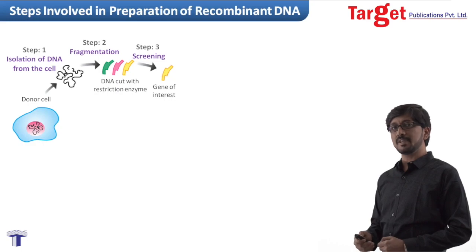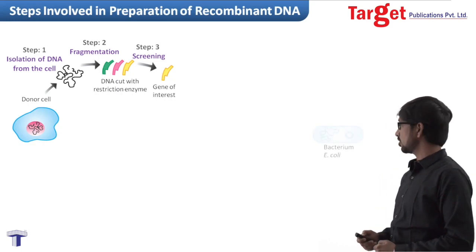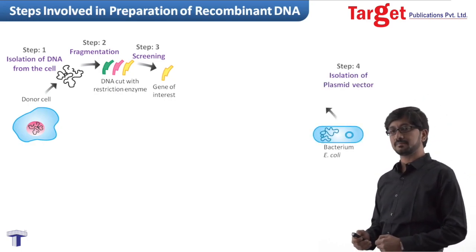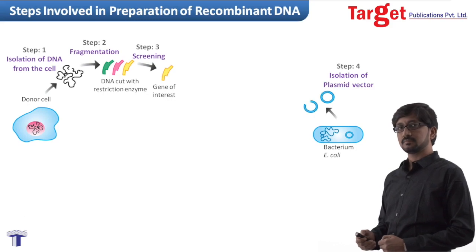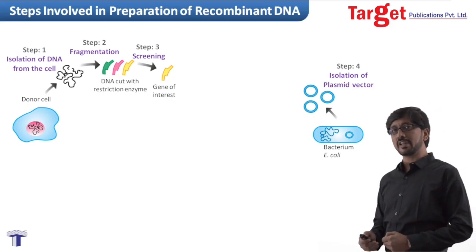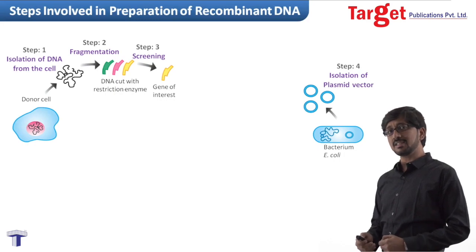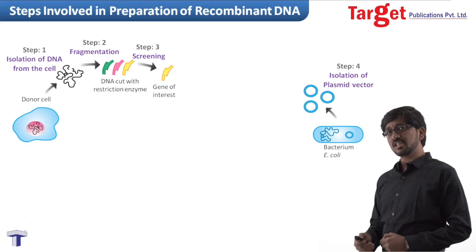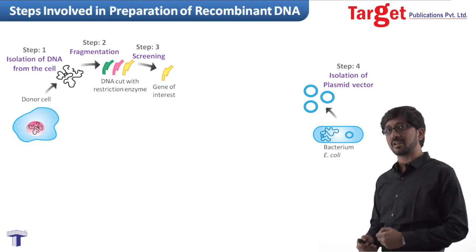So the next step is isolation of cloning vector from the bacterium. After isolation of the cloning vector from the bacterium, we cut this cloning vector with the help of restriction enzymes — the same enzymes which we have used for cutting the genetic material.